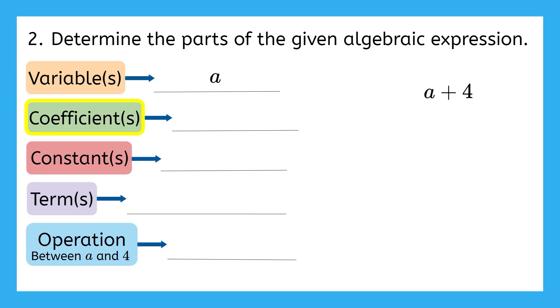Well, a coefficient tells us how many of the variable we have, and how many a's do we have here? Just one. So the coefficient of a is one. Next up, we have constants. Is there a fixed value that never changes in this expression? There is one constant in this expression, and it's four.